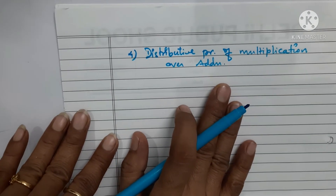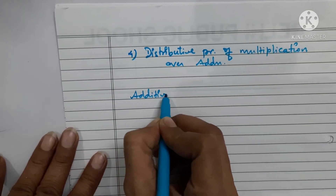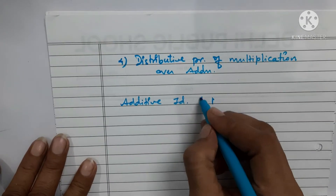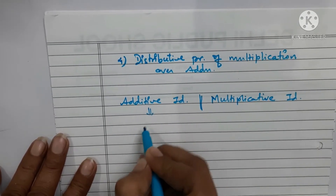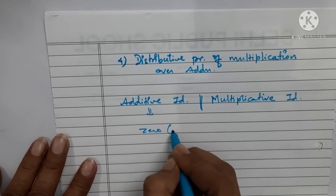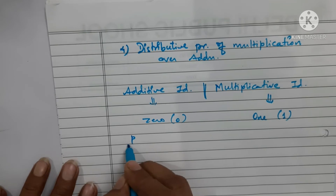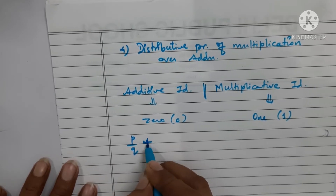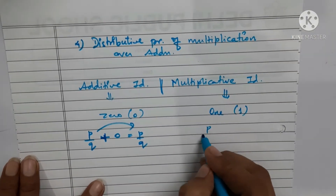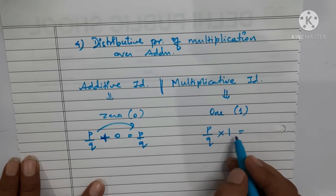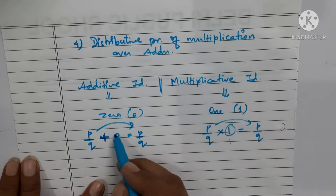One more point is regarding identity. The additive identity for rational numbers is zero, and the multiplicative identity is one. This means that if any rational number P by Q is added to zero, you get P by Q itself. And if any rational number is multiplied by one, you get the same number as the product.